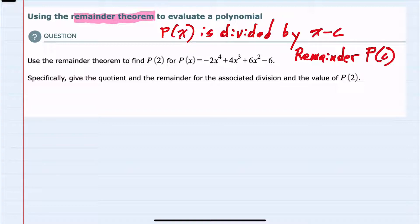So using this theorem we are asked to find three things. We're asked to find the quotient, what the remainder is, and then the value of p at 2.